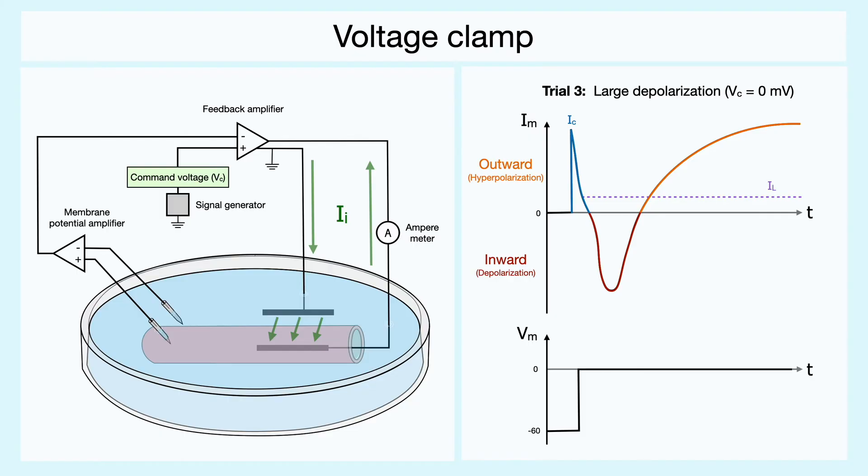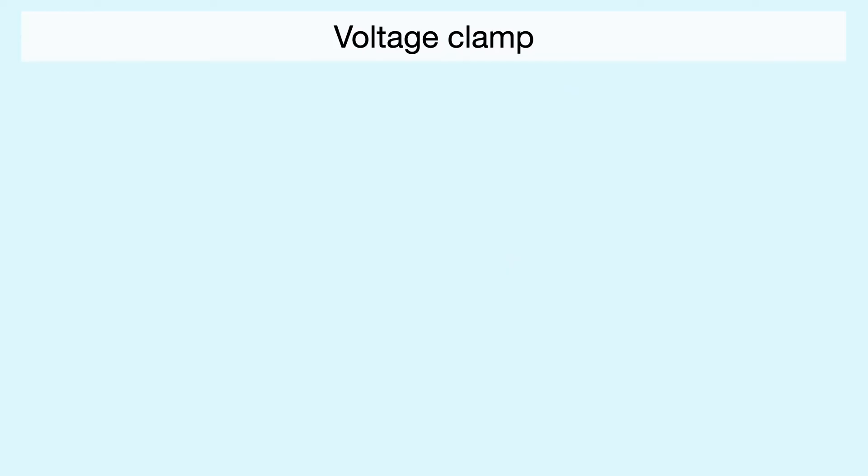As you can see, the considerably different response between trial 2 and 3 shows that there is a certain voltage dependence. From these results, we can establish that the ionic permeabilities change drastically as a function of voltage and time, but it doesn't tell, or at least indicate to us very clearly, what ions are involved in the process.